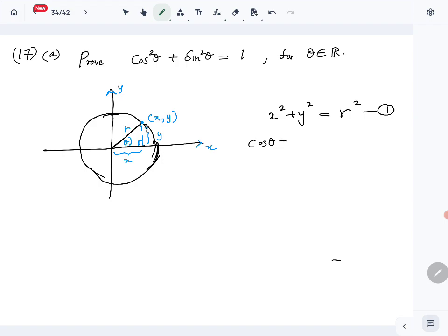Cos theta is going to be what? Adjacent over hypotenuse, so x over r, or we can write it as r cos theta equals x. So that is the second one. Then we will write sin theta similarly: opposite over hypotenuse, so opposite is y, opposite side over hypotenuse r, so r sin theta is then going to be equal to y.